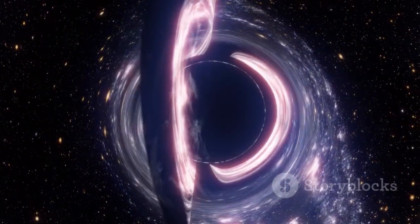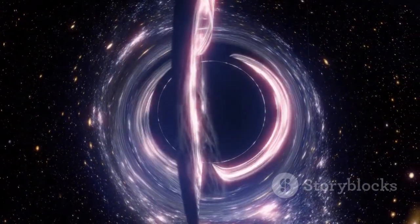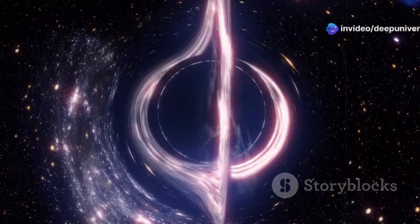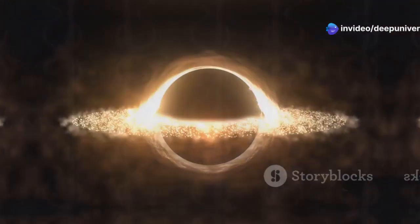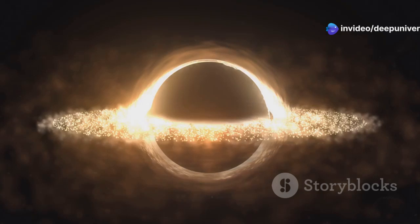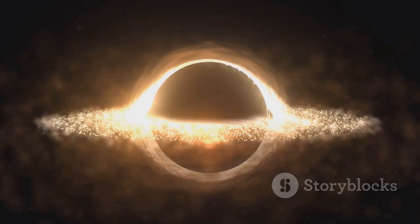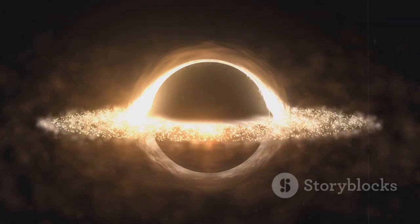In 2019, the world marveled at the first ever image of a black hole, a supermassive giant residing in the galaxy M87. This groundbreaking image, captured by the Event Horizon Telescope, revealed a bright ring of light encircling a dark central region, the shadow of the black hole.